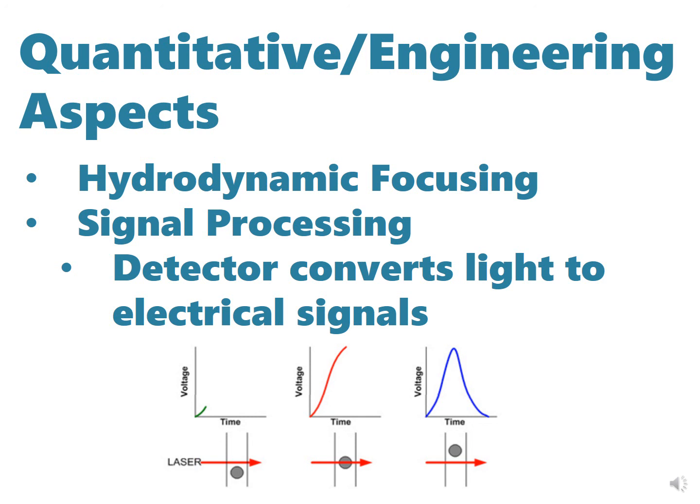Electronics quantify the electric pulse by calculating the height, area, and the width. The height, area, or maximum and integral respectively are used to measure signal intensity because their magnitudes are proportional to the number of photons that interacted. The width, on the other hand, is proportional to the time that the particle spent in the laser. It can be used to distinguish doublets from singlets.